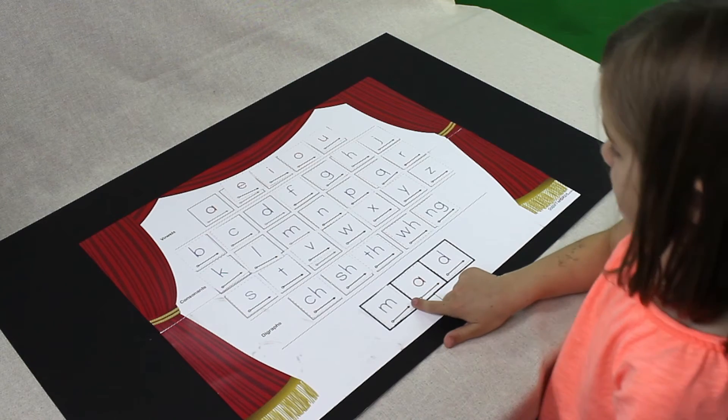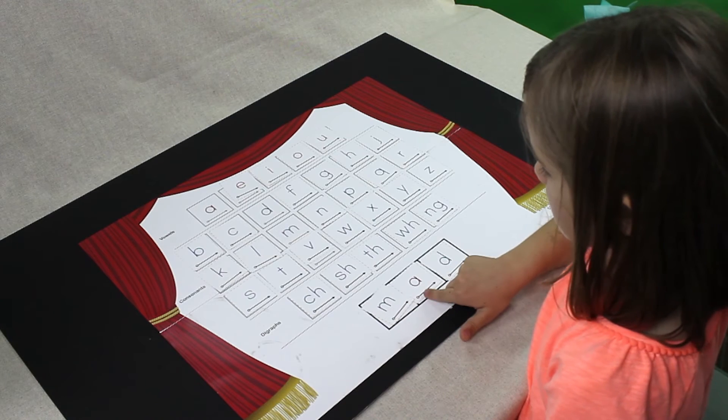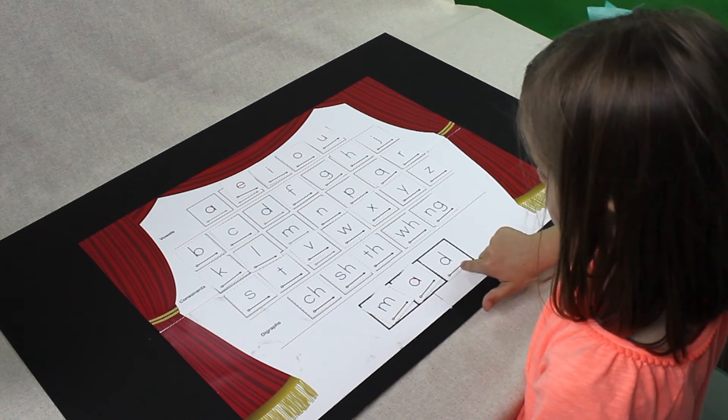Now say the sound on each card. M-A-D. Say the sounds fast. What word? M-A-D. Mad. Good job.